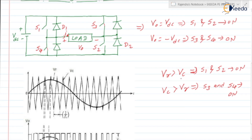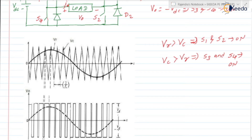The reference wave is a sinusoidal wave and the carrier wave is a triangular wave. FC is the carrier wave frequency, so 1/FC is the time taken to complete one cycle by the carrier wave. The peak value of VR is VM, and VC is the peak value of the carrier wave.